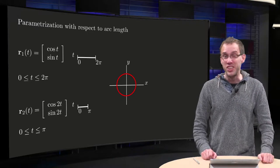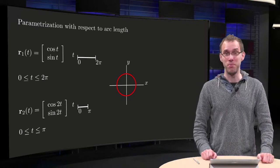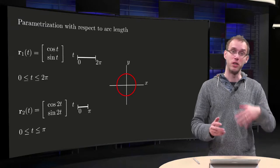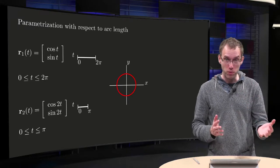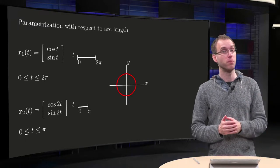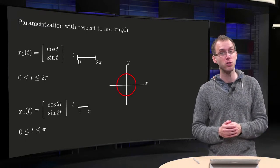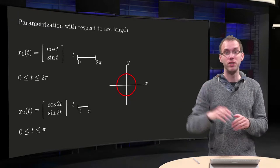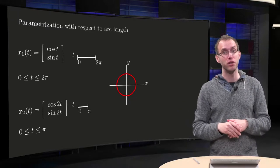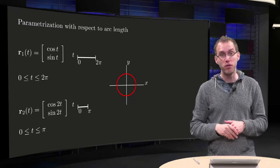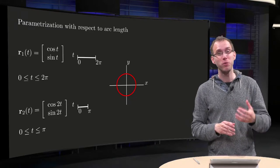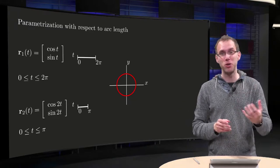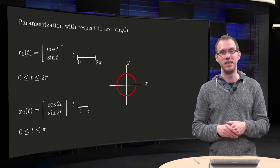A lot of parameterizations give the same curve. You can change the starting point of your parameterization, or the speed with which you traverse the curve. But what would be a logical parameterization?